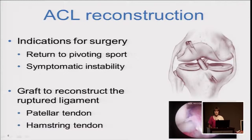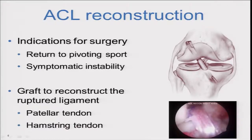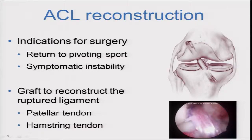For athletes involved in pivoting sports, the indication is usually to have surgery. Another indication for surgery is symptomatic instability — when the knee gives way on walking, having a shower, or going up and down stairs. Usually surgeons will take part of either the athlete's own patella or hamstring tendon to reconstruct the ruptured ligament.